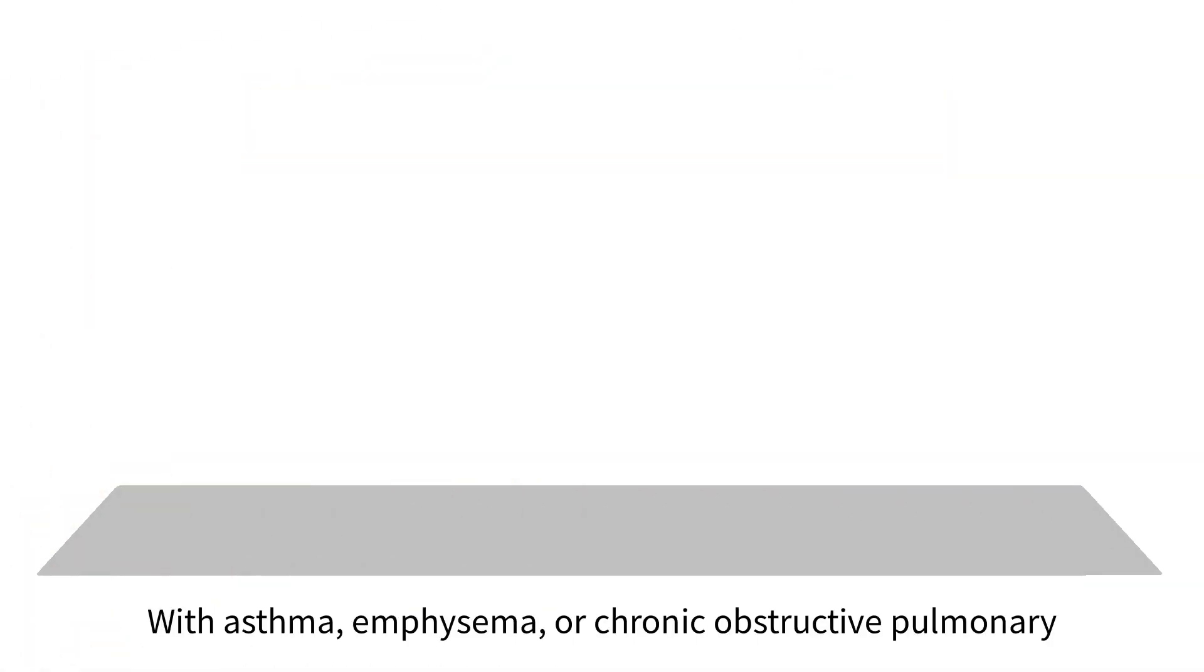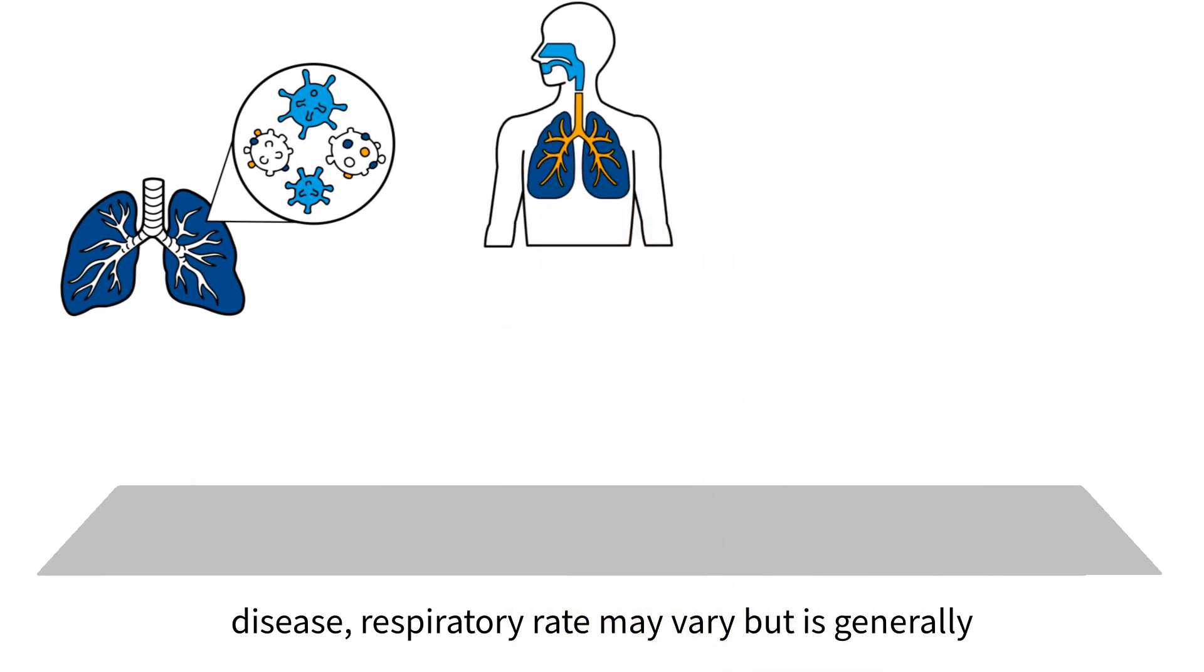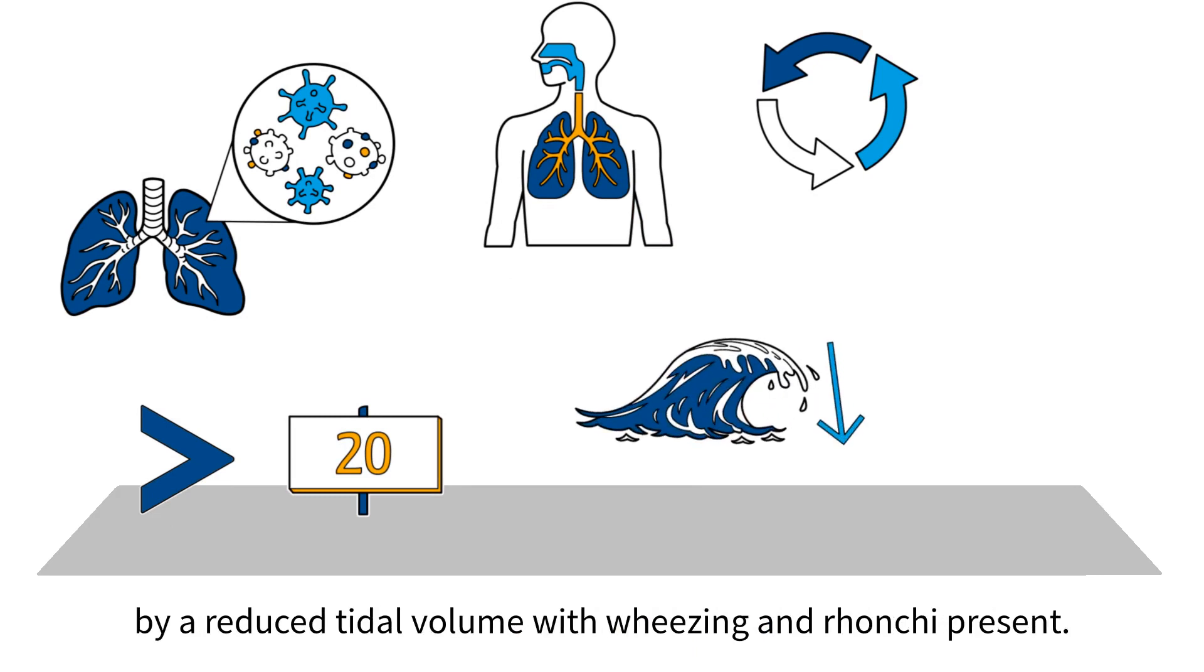With asthma, emphysema, or chronic obstructive pulmonary disease, respiratory rate may vary but is generally greater than 20 breaths per minute, and often accompanied by a reduced tidal volume, with wheezing and ronchi present.